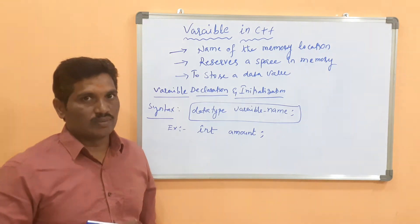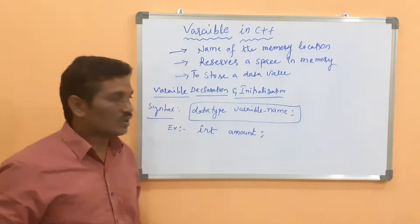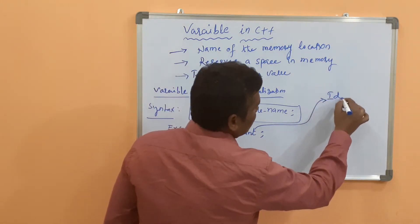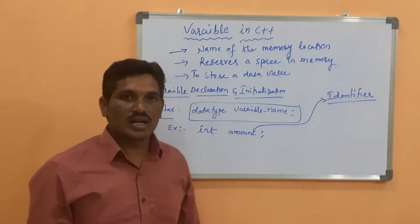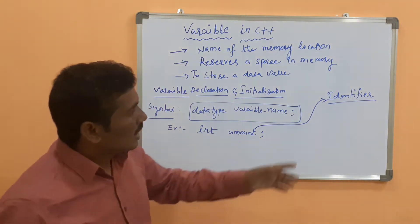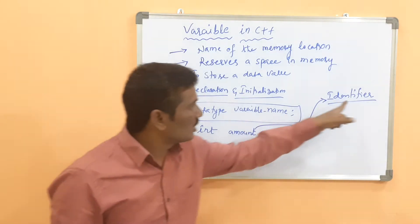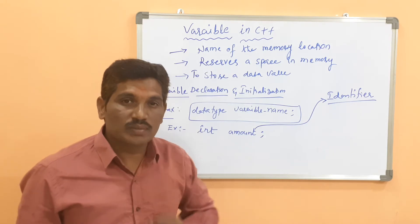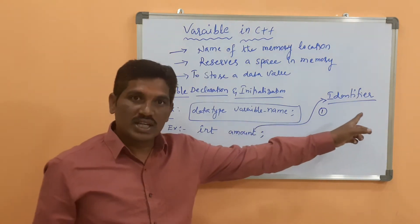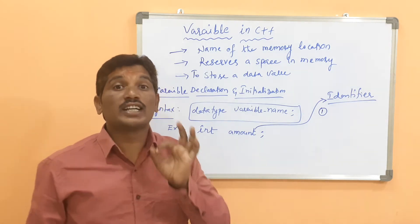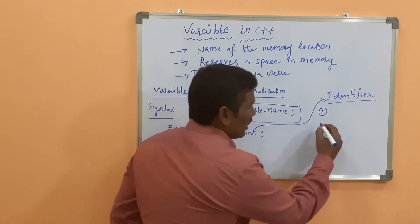What are the rules for declaring the variable? Whenever the variable is declared, the variable must satisfy all the rules of the identifier. An identifier refers to the name of the variable, name of the class, name of a function, or name of an array. The first rule is: the identifier is a combination of alphabetic characters, digits, and the underscore operator.